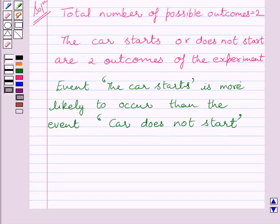So, we can write, we are not justified to assume that each outcome is as likely to occur as the other.